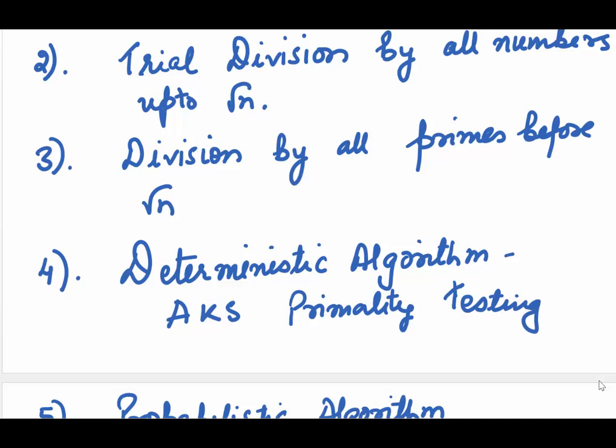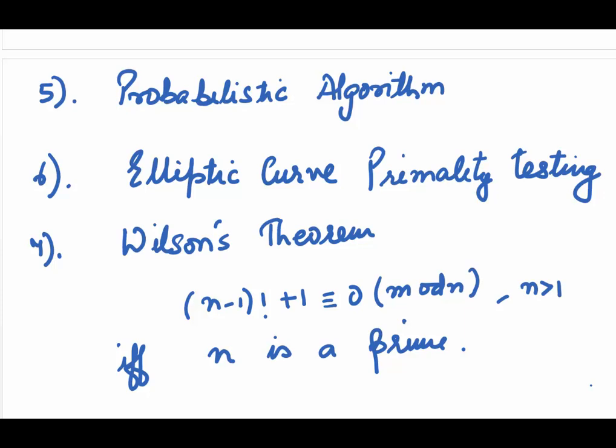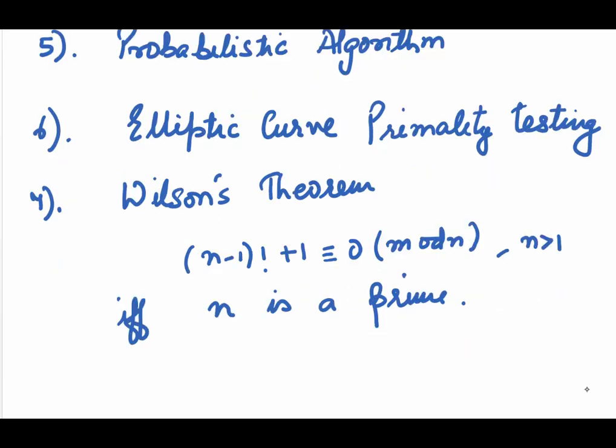These days we are testing primality for huge numbers. For that, we have deterministic algorithms. AKS primality testing is one of them. It tests the number for primality in polynomial time. There are probabilistic algorithms which tell us that there is a high probability of a given number to be prime. There are elliptic curve primality testing methods and the Wilson's theorem which states that the congruence n minus 1 factorial plus 1 is congruent to 0 mod n where n is some positive integer greater than 1 is satisfied if and only if n is a prime number. And then there are specific methods like the Lucas-Lehmer method which is used for finding whether a given number is a Mersenne prime or not. Let me mention one more thing. Fermat's little theorem cannot be used because the converse is not true.